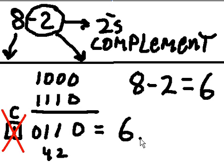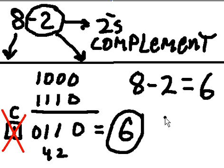0, 1, 1, 0 is the binary representation of the number 6. And there's our answer.